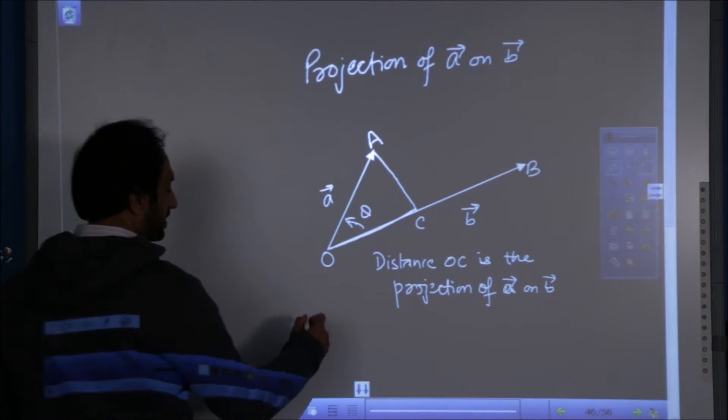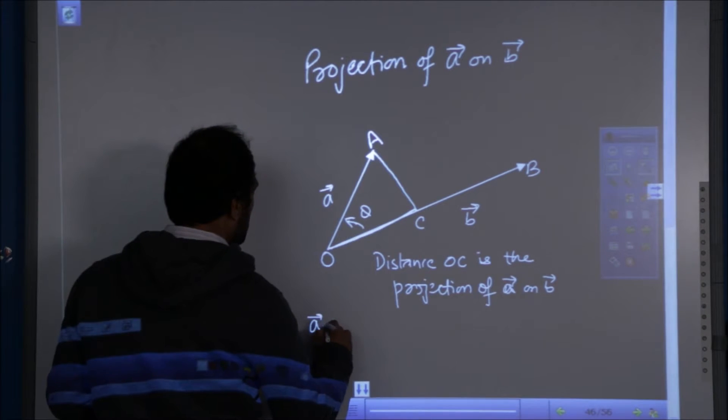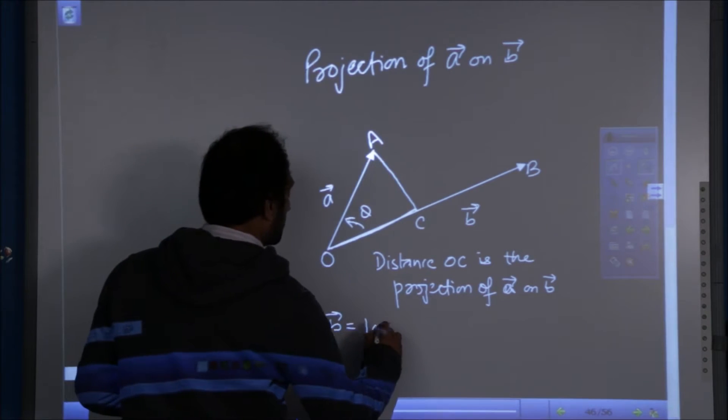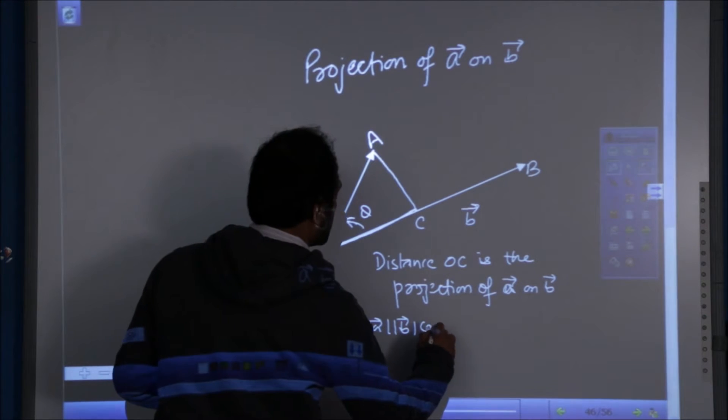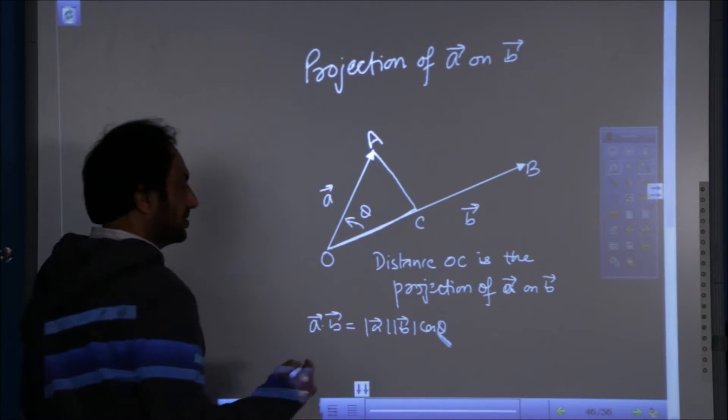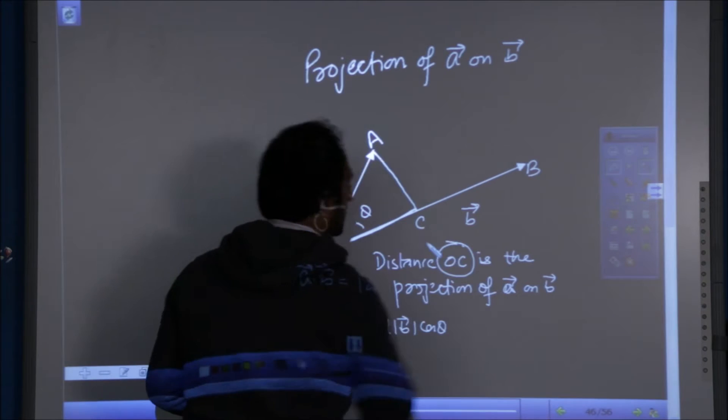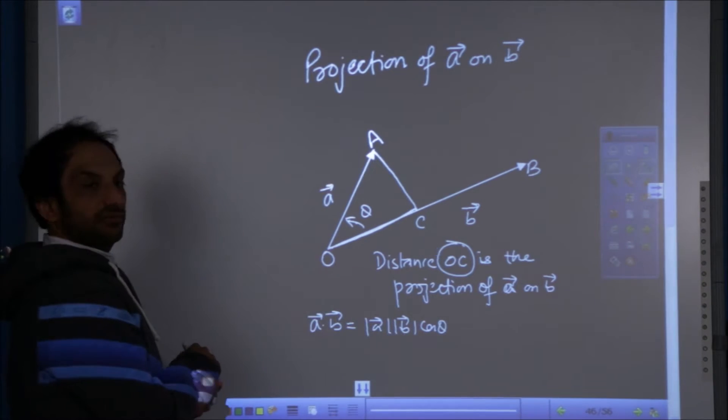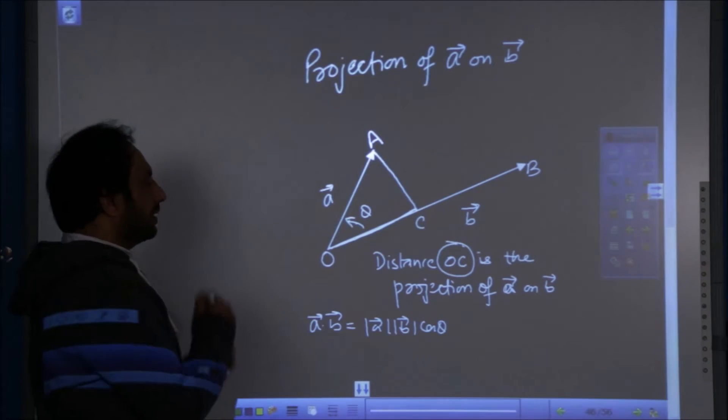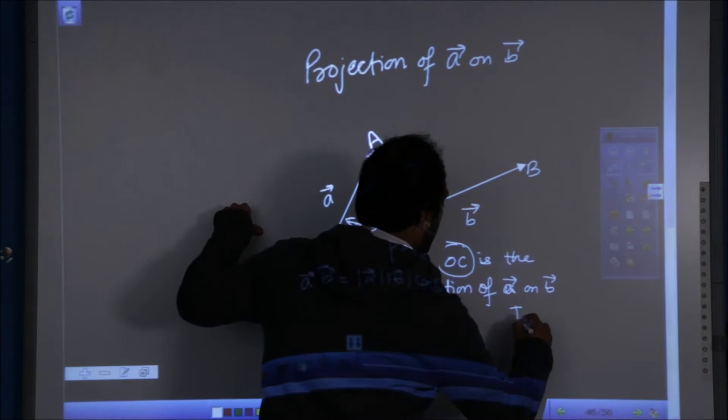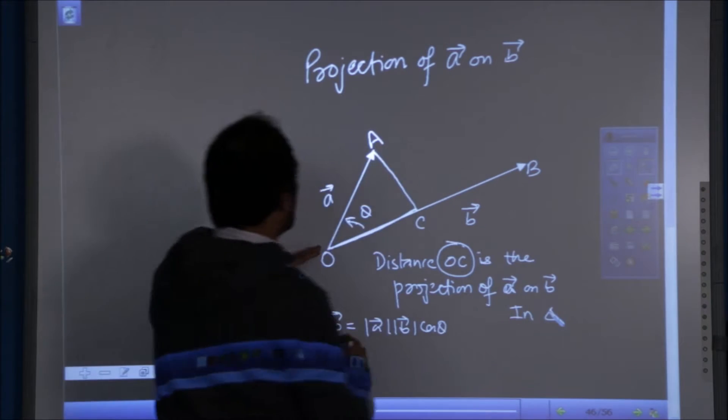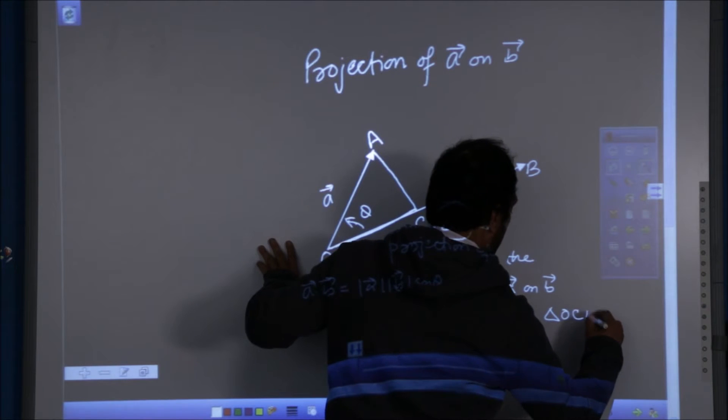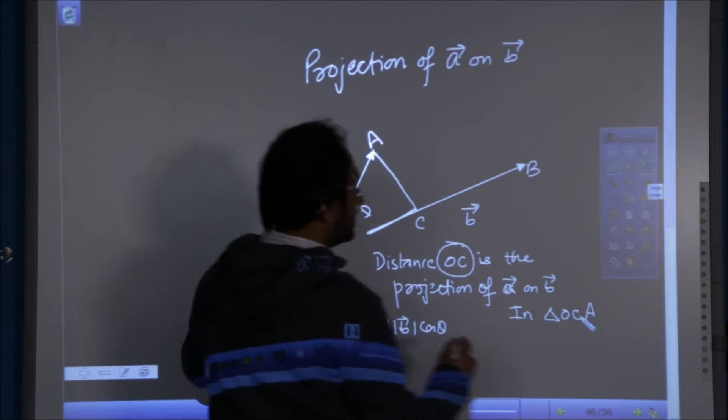We know that A dot B is mod A mod B cos theta. Also, the distance OC is the projection of A on B. Now, in triangle OCA, what is cos theta?